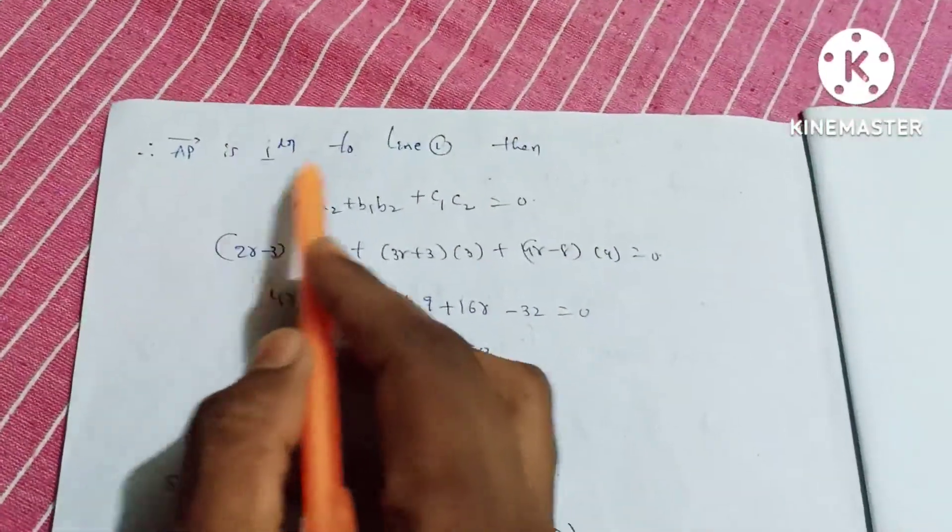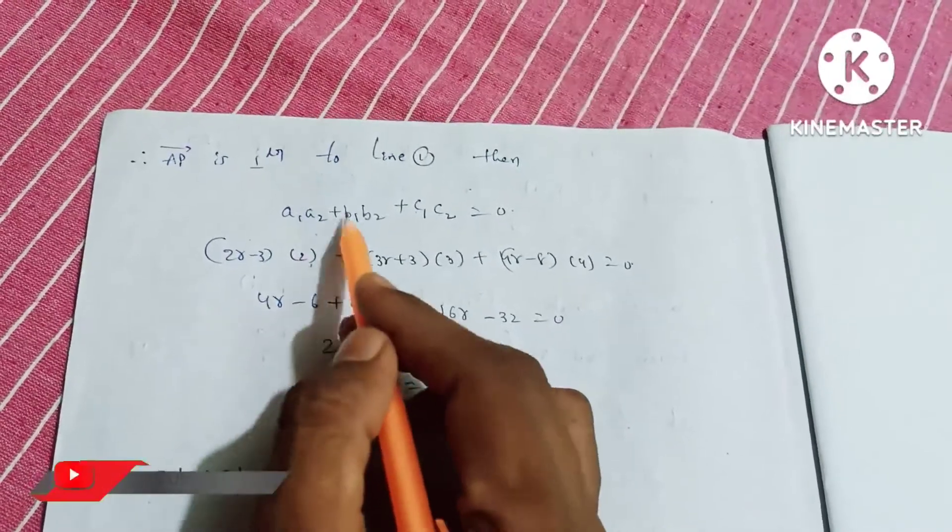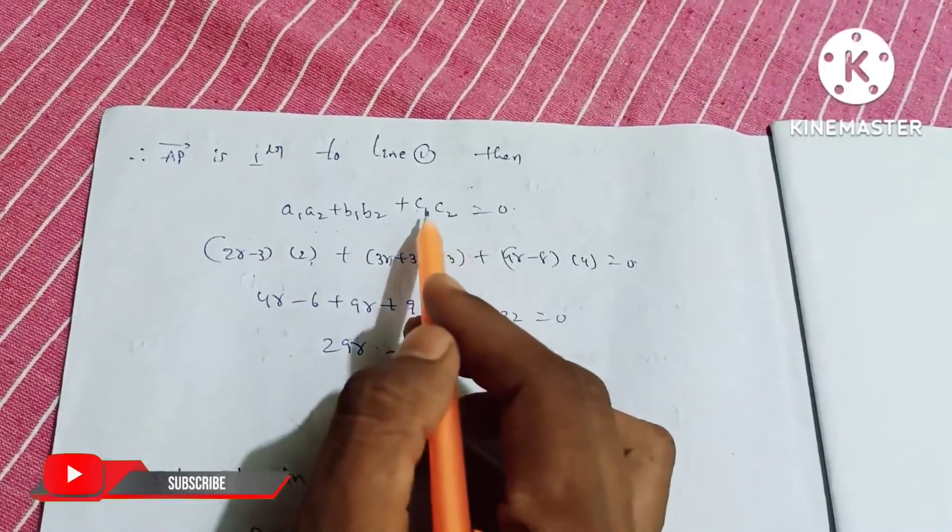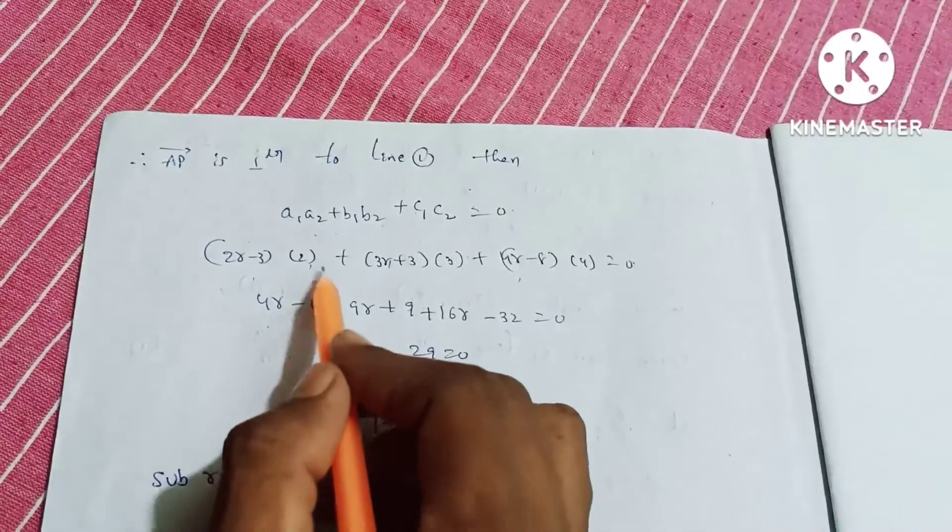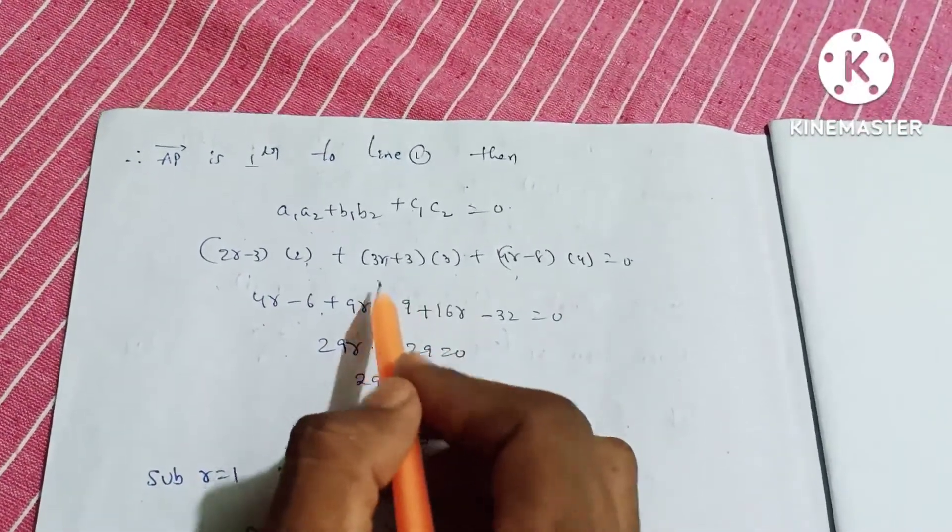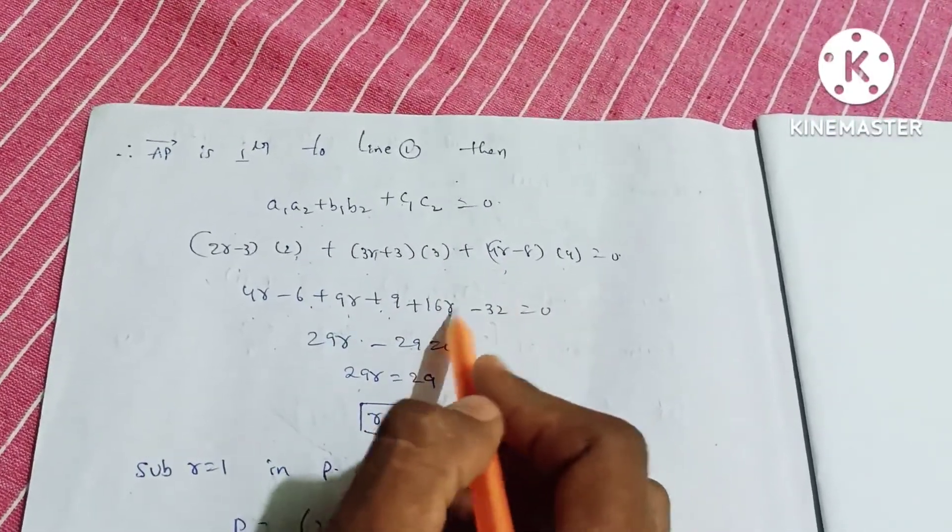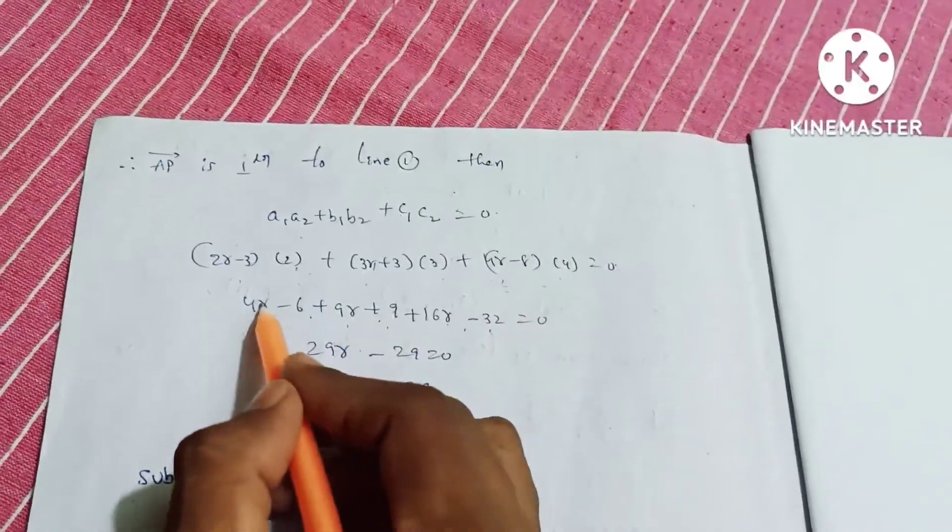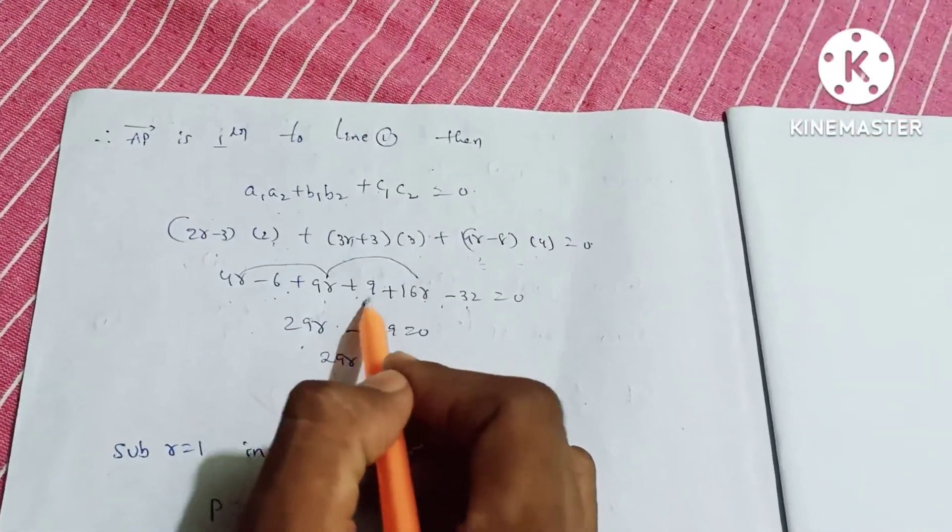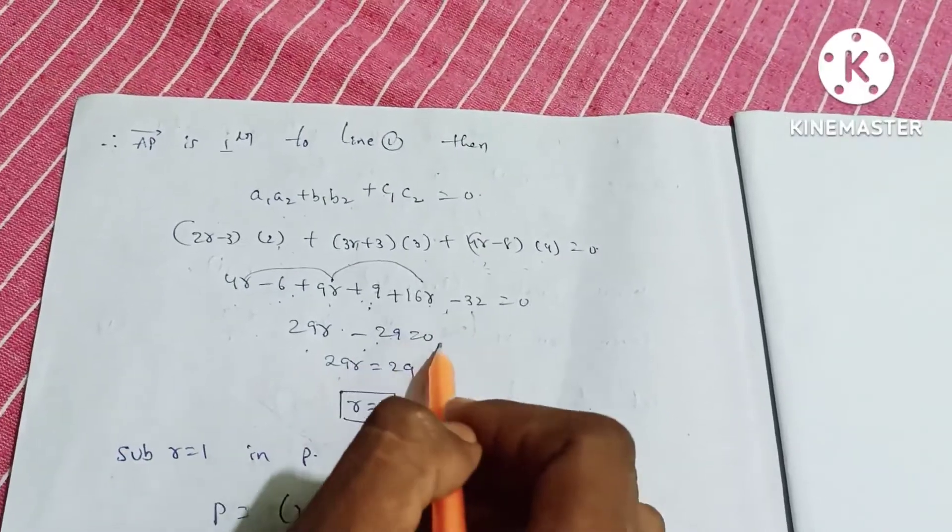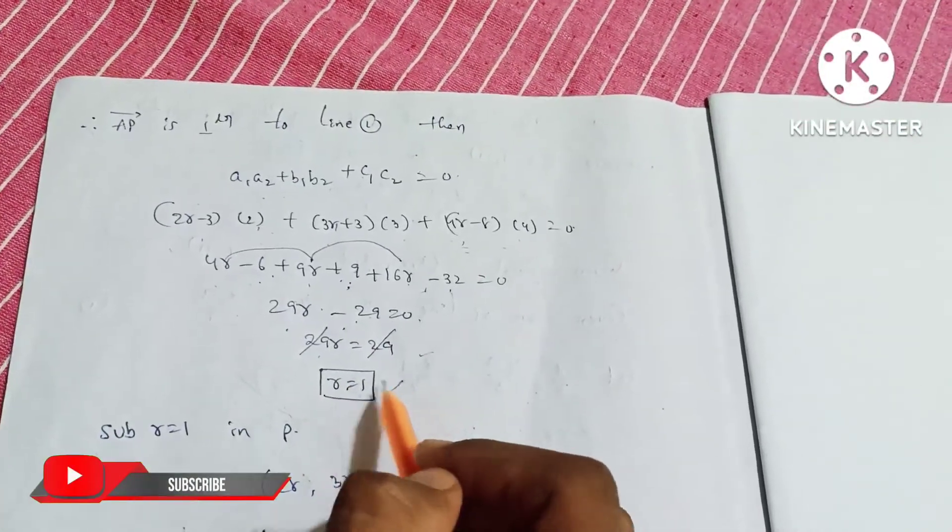Therefore, if AP is perpendicular to line 1, then a1·a2 + b1·b2 + c1·c2 = 0. 2(2r-3) + 3(3r+3) + 4(4r-8) = 0. 4r-6 + 9r+9 + 16r-32 = 0. 29r-29 = 0, so r equals 1.